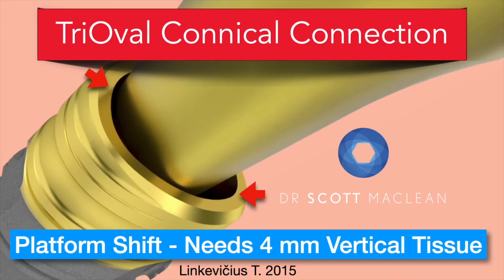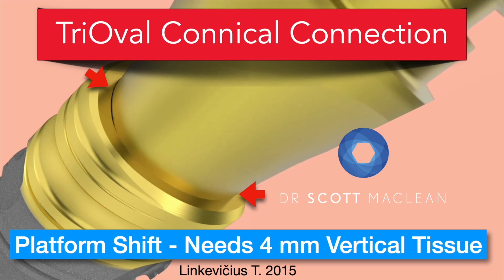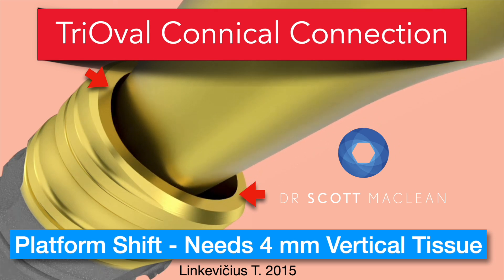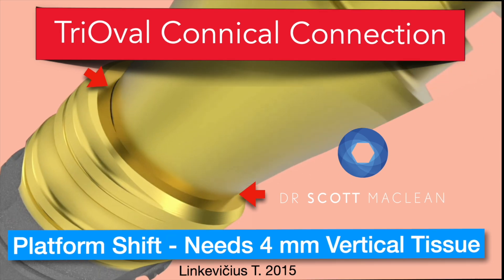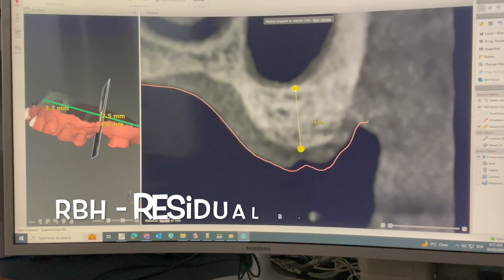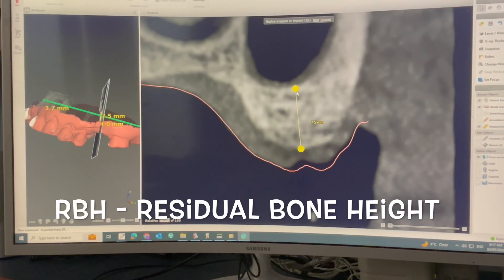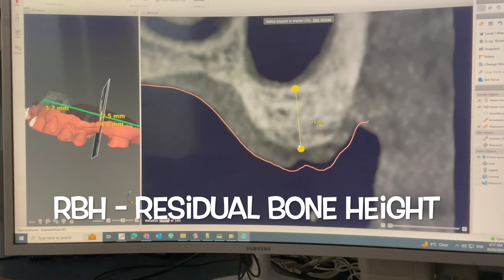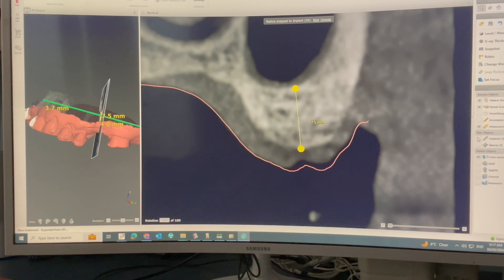We're talking about the tri-oval conical connection and how this needs four millimeters of vertical tissue when you're doing a sinus lift procedure. We're going to be using the DTX Studio software to evaluate the residual bone height and to see how we're going to do this procedure to place the N1 implant.